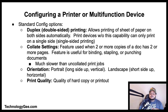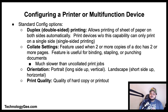Here are some of the standard configuration options for printers or multifunction devices. You have duplex or double-sided printing — a feature that allows the printing of a sheet of paper on both sides automatically. Print devices without this capability can only print on a single side of paper, which is also known as single-sided printing.